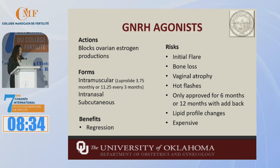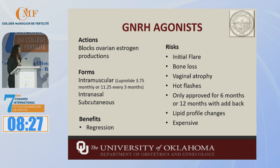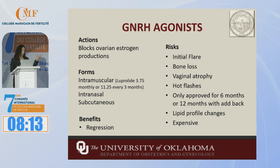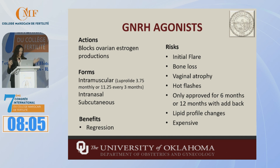The problem is the amount of side effects — it creates a very hypoestrogenic state, causing bone loss, vaginal atrophy, and hot flashes. It's very expensive and hard to get approved in the U.S. It's only approved for six months of use unless you use add-back therapy, such as Aygestin five milligrams or norethindrone, though you can also use combined hormonal contraceptives as add-back.